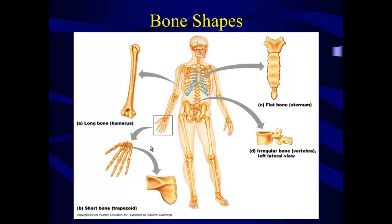Flat bones are pretty self-explanatory: they are broad and flat, cover a wide surface area, but aren't very tall. Examples of flat bones include your sternum, your scapulae, your pelvic bones, and the bones of your cranium — even though they may be curved rather than flat like a piece of paper. Irregular bones are bones that don't have a regular shape and can't be put into one of the other categories — things like your vertebrae with a disc and bony projections, or a lot of your facial bones.